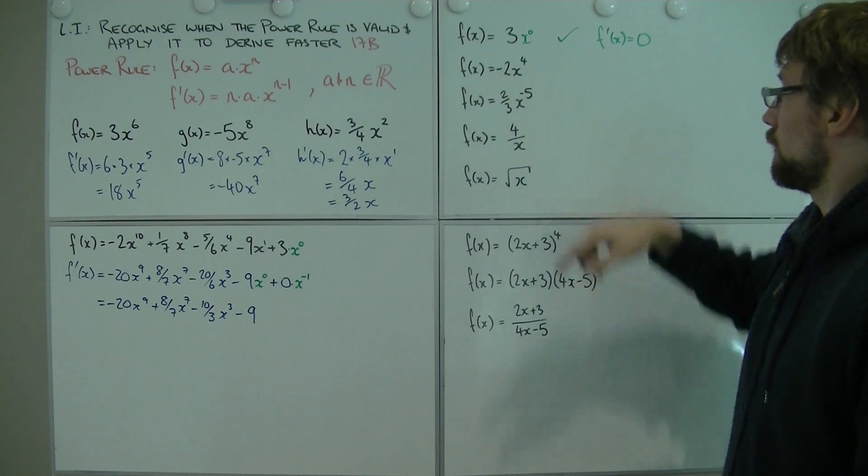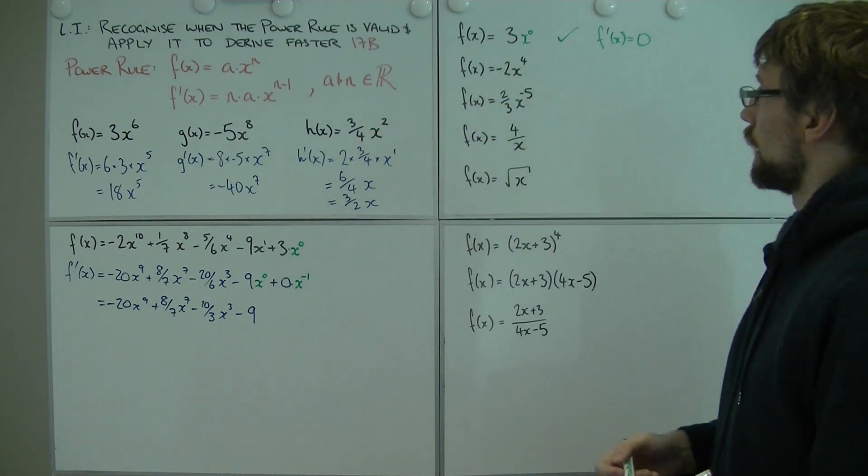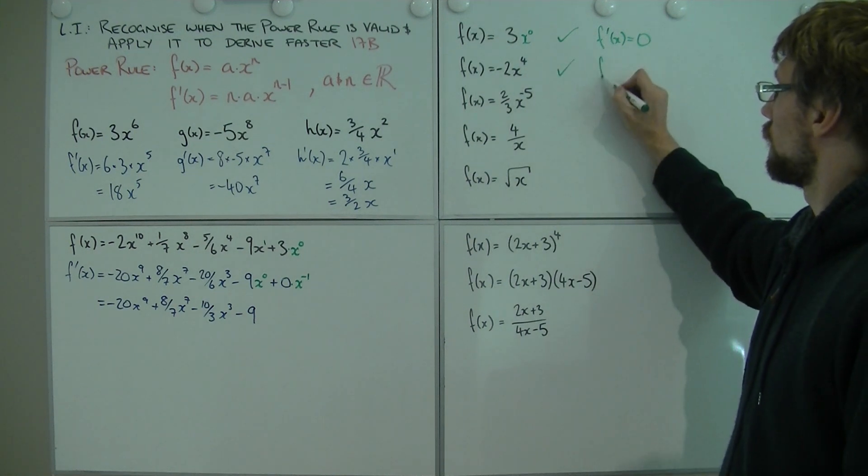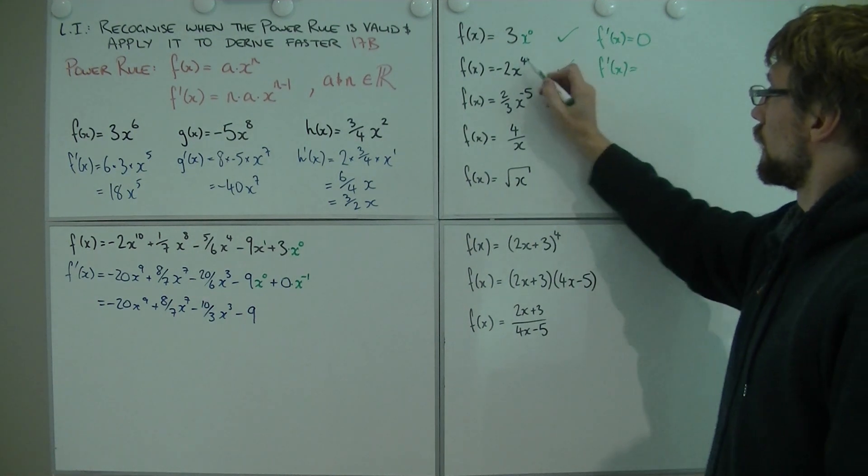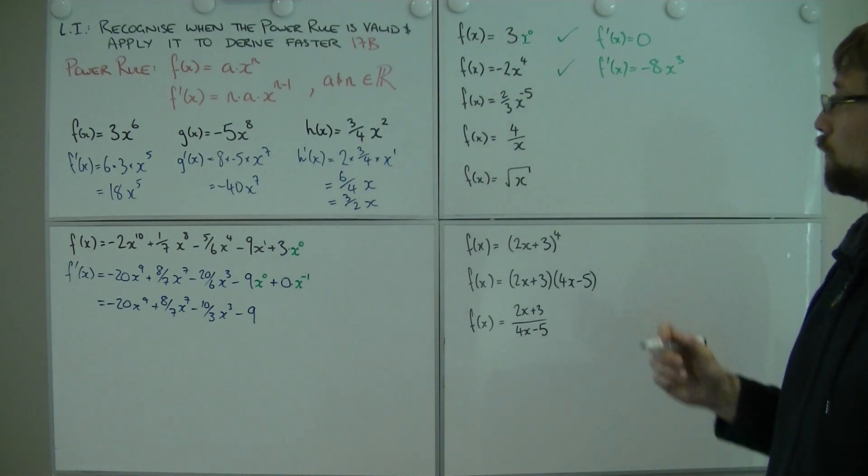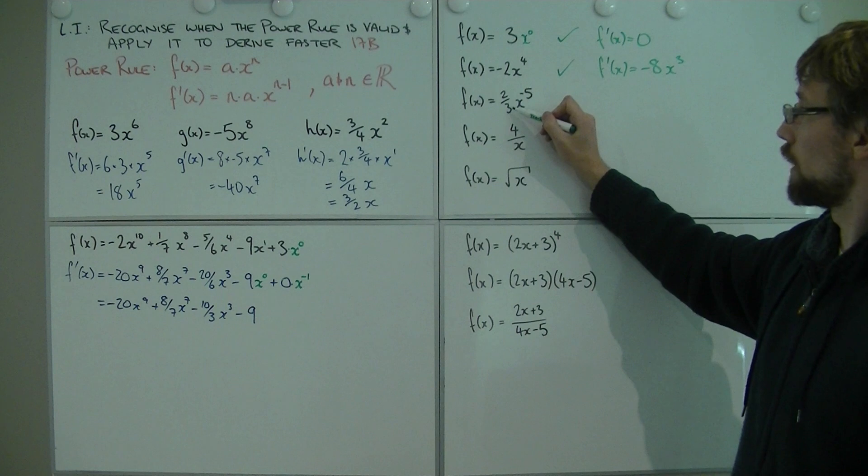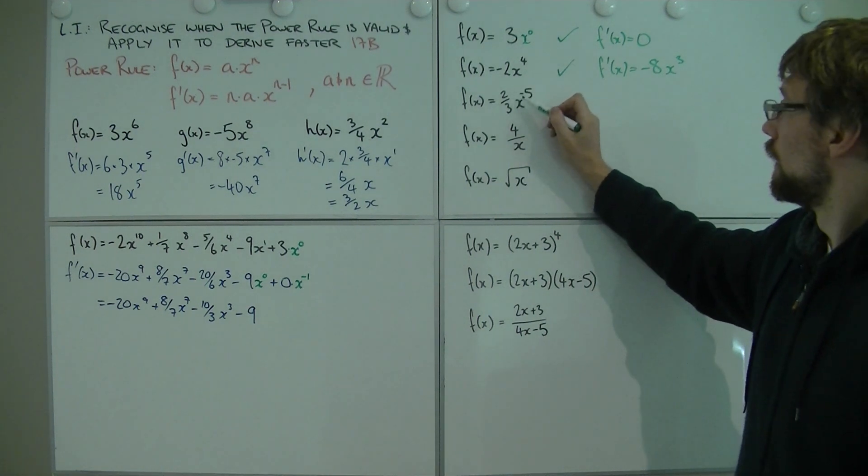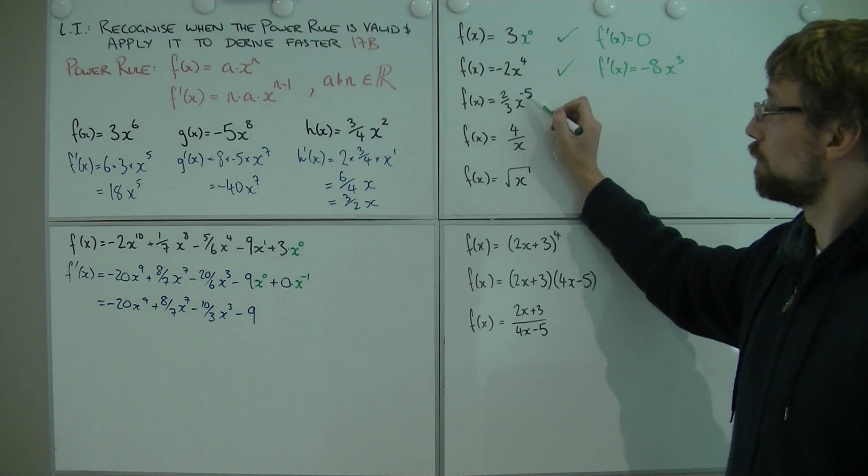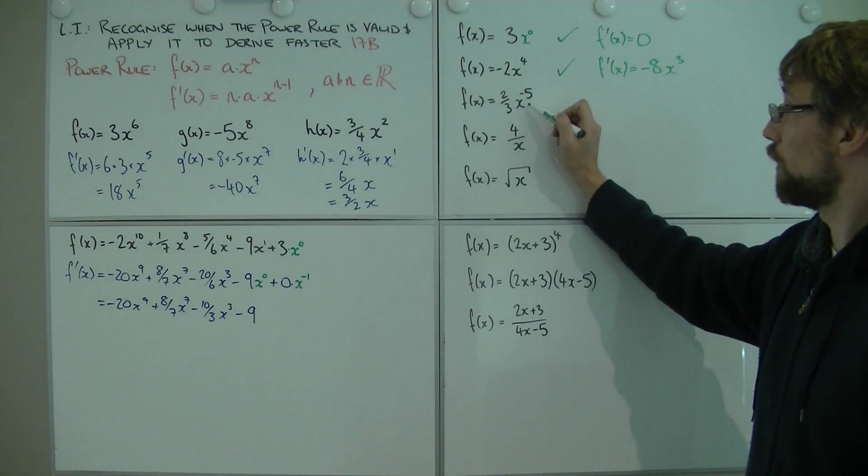So regardless of what this number is, if you have a constant and you derive it, you're always going to get 0. f of x equals this. Well, that's just one of these guys. That's nice and boring, because I've got an a and an n. So f' of x would equal, bring the 4 down, we get negative 4x to the 3. Can we do this? Well, it's got a fraction, but a fraction's still a number. This is a negative power, but that's still a number. So that's actually fine as well.